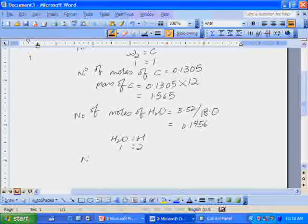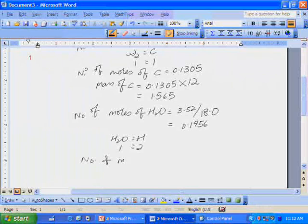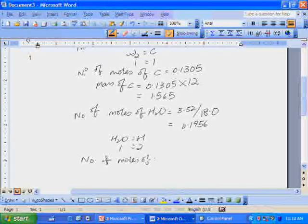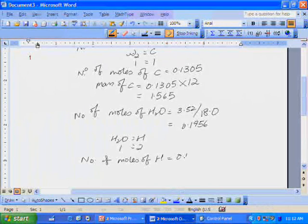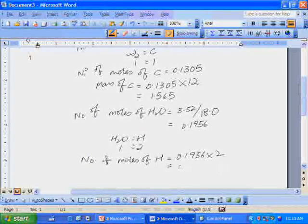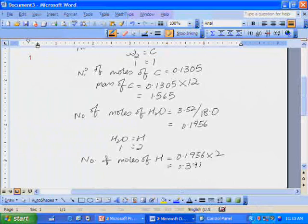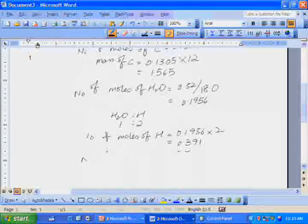So the number of moles of hydrogen is 0.1956 times 2. And the answer is 0.391 moles. Translate that to mass of hydrogen.